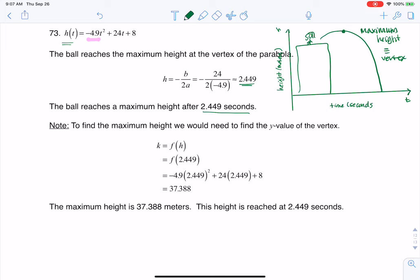If you wanted to actually find the y value or the height value there, you could go ahead and plug 2.449 in, and then you see that you get a maximum height of 37.388 meters. It didn't ask for that. This part here was extra. I just wanted you to see how that happens.